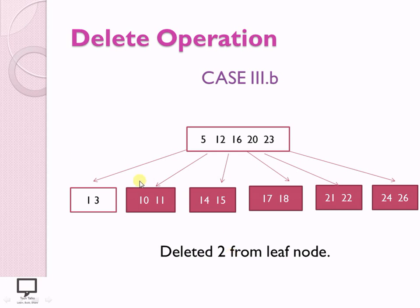If the sibling node has insufficient values — for example, now wanting to delete 3 — we instead merge: move 5 downward and merge keys 1, 5, 10, 11 into a single node with 4 key values, which becomes the left child of node 12 with all values less than 12. Depending on the situation, you apply the appropriate case to find the correct solution.